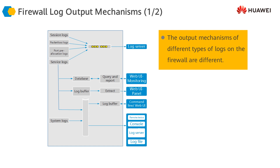Service logs are another type of log. The firewall has multiple output paths for service logs. The first output path is to directly generate service logs on the log server through independent channels. The second output path is to generate logs in the memory database, which processes them using the log query module, with reports and corresponding logs displayed on the web user interface. The third option is to generate these logs in buffers, extracted and displayed on the web user interface panel. The fourth and final option is to generate service logs through the information center.